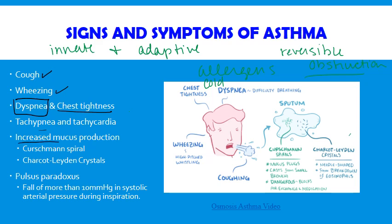There is also increased mucus production. The sputum and mucus can contain things that are indicative of that increased production. In the sputum, we'll see Curschmann spirals — these are literally spiral-shaped mucus plugs. The mucus has been overproduced in such a way that it filled the small bronchi and created almost like a cast — like a plaster of Paris of your bronchi — and then became dislodged and came out in your sputum.